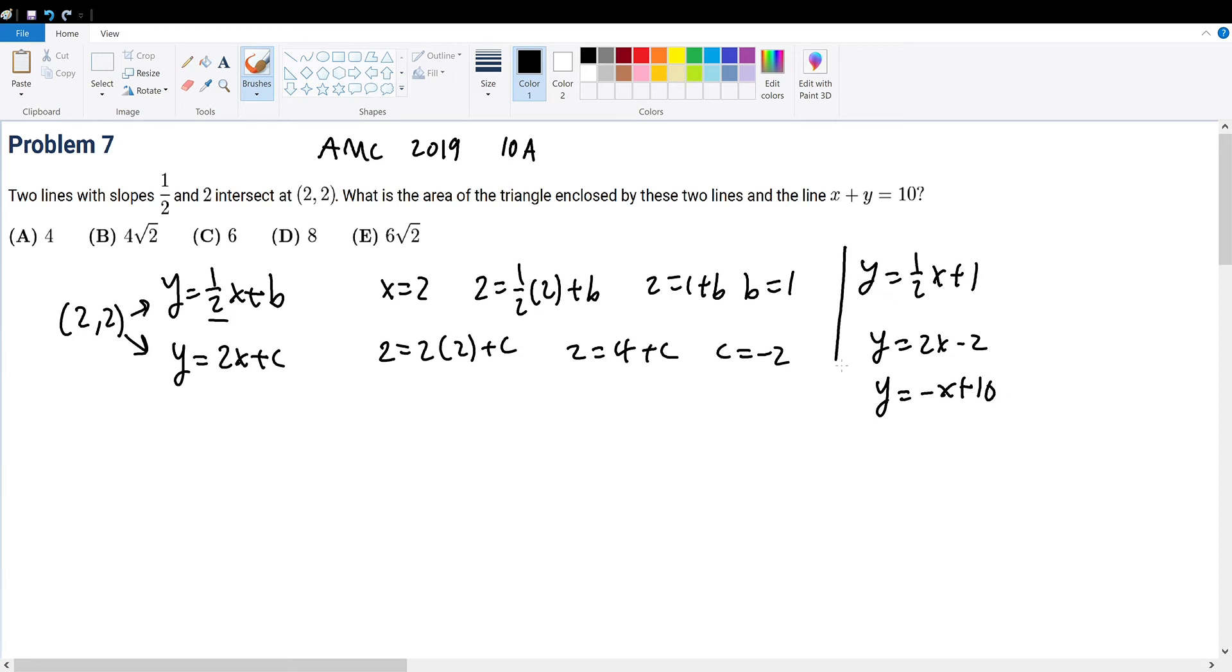Now these three lines all intersect at various points to form a triangle. Now, given the triangle points, is there any way that we can find out the area? Well, it's a very simple trick.